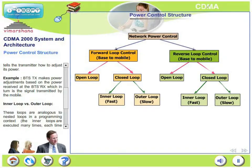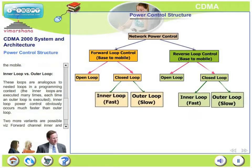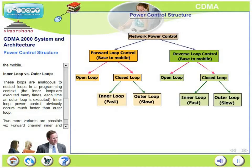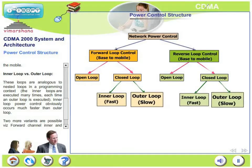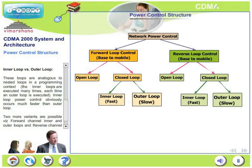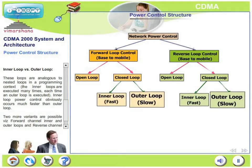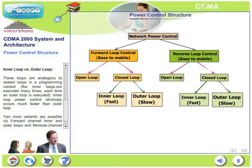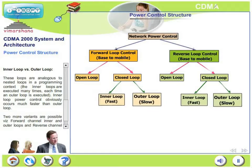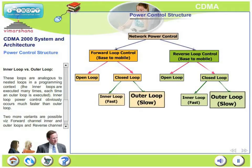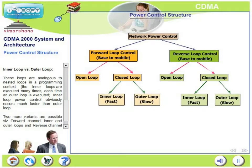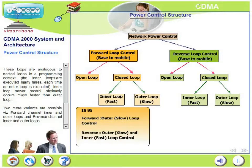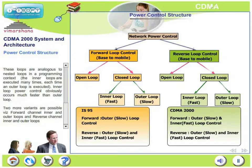Let us look at another set of terminologies: inner loop versus outer loop. These loops are analogous to nested loops in a programming context. Inner loops are executed many many times each time an outer loop is executed — for one parameter update in an outer loop, an inner loop may be executed 50 times. Two more variants are possible: forward channel inner loop and forward channel outer loop, reverse channel inner loop and reverse channel outer loop.